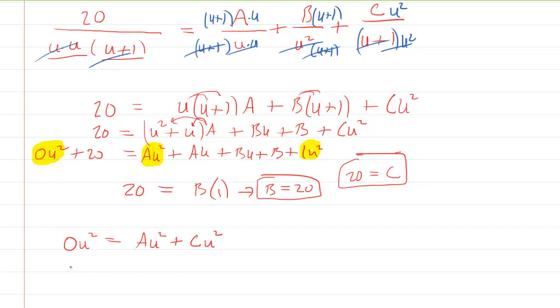Divide everything by u squared so they cancel. And now you have 0 equals A plus C. And we have the value of C. It was found earlier to be 20. So we'll put that in. And then we can clearly see now that the A must equal negative 20.